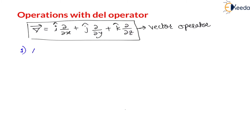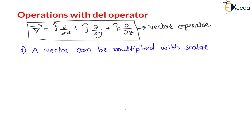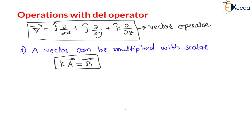Any vector can be multiplied with a scalar. If we have one scalar quantity k and one vector a, then if this scalar is multiplied with vector a we will get a new vector — let us say vector b. After the multiplication of a scalar with a vector, we always get a vector.